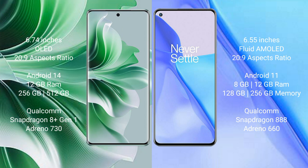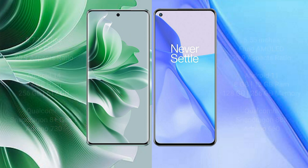OnePlus 9 comes with 8GB or 12GB RAM and 128GB or 256GB internal storage, a Qualcomm Snapdragon 888 processor, and Adreno 660 GPU.